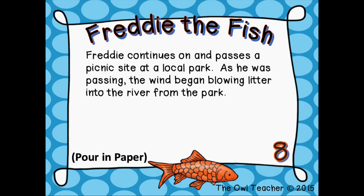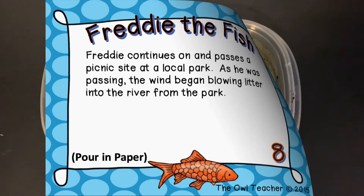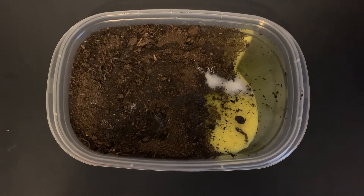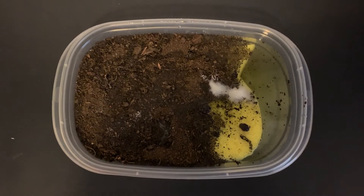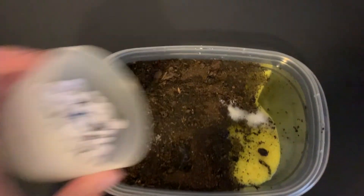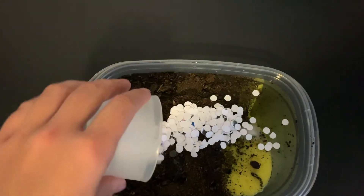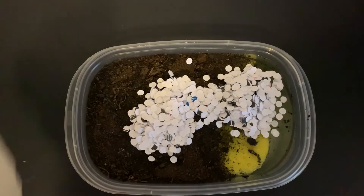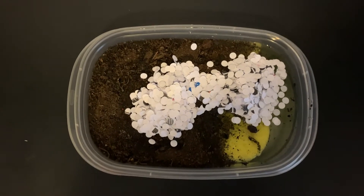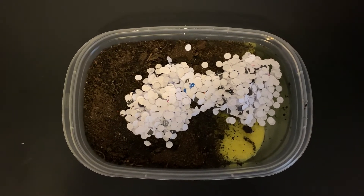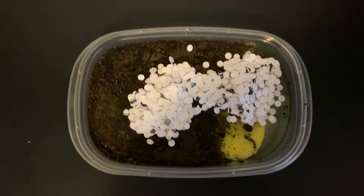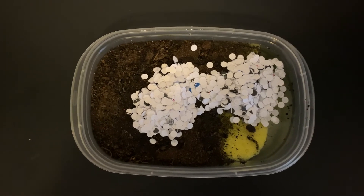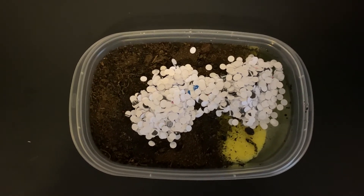Freddie continues on and passes a picnic site at a local park. As he was passing, the wind began blowing litter into the river from the park. So now we're going to add the little paper. Oh no — we can barely see Freddie anymore! He's trapped under the litter.